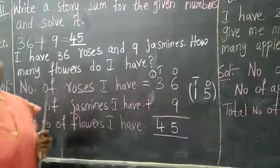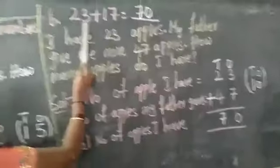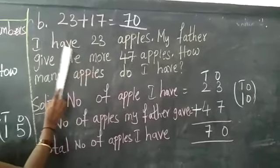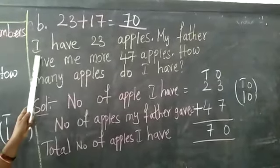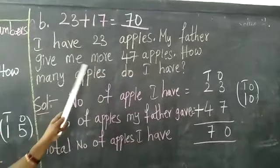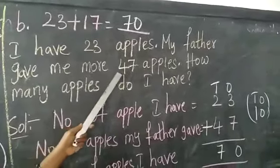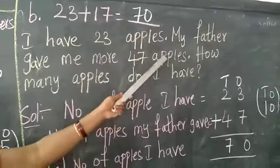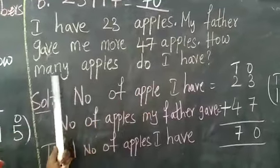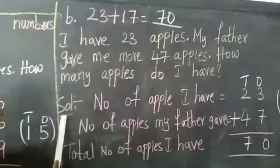Next, come to B1. The B1 is 23 plus 17. Here you have given the sum. You have to solve the sum. I have 23 apples. My father gave me more 47 apples children. How many apples do I have? So next is solution children. You are solving the answer.